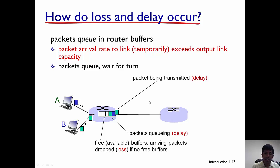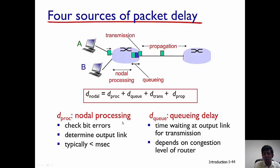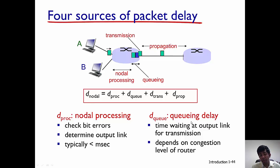Let's try to understand delay and loss in a little more depth. Let's consider the delay at a node, called the nodal delay, at any particular router. There are four components of delay at a particular router. The first is the processing delay — the amount of time the router takes for processing. A router has to check for bit errors and determine which outgoing link to send the packet on. It's typically on the order of a few milliseconds or even less than a millisecond.